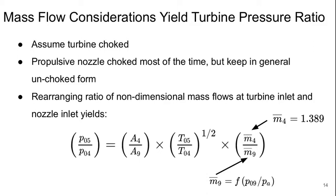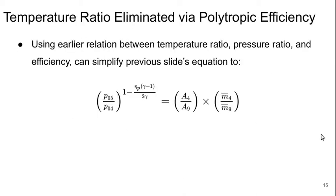For mass flow considerations, we can directly get our turbine pressure ratio. If we assume the turbine is choked, and the propulsive nozzle will be choked most of the time, we'll keep the unchoked form here so we can see how that works. We can rearrange the ratio of the non-dimensional mass flows of the turbine inlet and the nozzle inlet to get the pressure ratio P05 over P04. This is a function of the area ratio between the nozzle exit and turbine inlet, the temperature ratio across the turbine, and the non-dimensional mass flows. M-bar 4 will be a constant because we assume it's choked, and M-bar 5 depends on P09 over Pa. We can get rid of the temperature ratio using the polytropic efficiency, simplifying this to just the pressure ratio to some power as a function of the area ratio times the ratio of the non-dimensional mass flows.